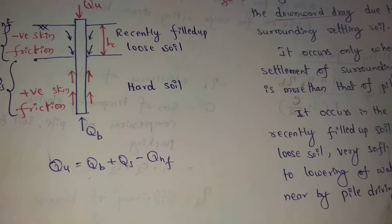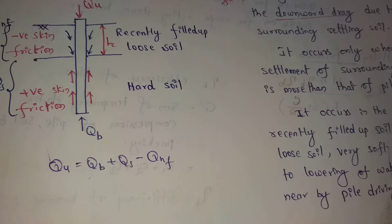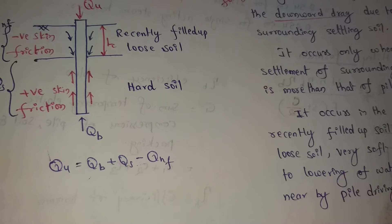Negative skin friction acts in the case of recently filled loose soil, very soft clays, and a rising water table — these are conditions where negative skin friction has a chance to act.